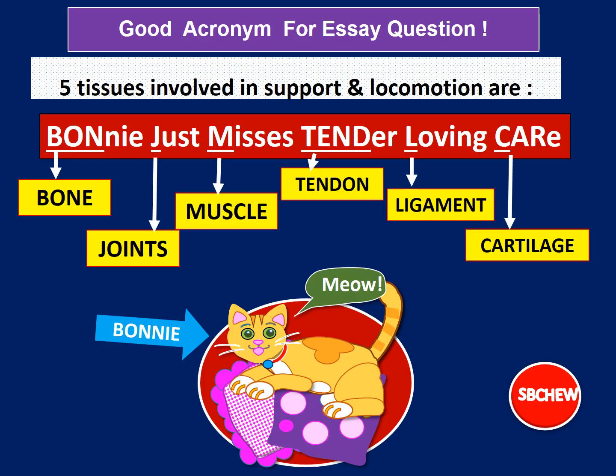Here is a useful mnemonic for essay questions involving the five tissues and one structure for support and locomotion: 'Bony just misses tender loving care.' B-O-N for bone, J for joints, M for muscle, T-E-N-D for tendon, L for ligament, and C-A-R for cartilage.